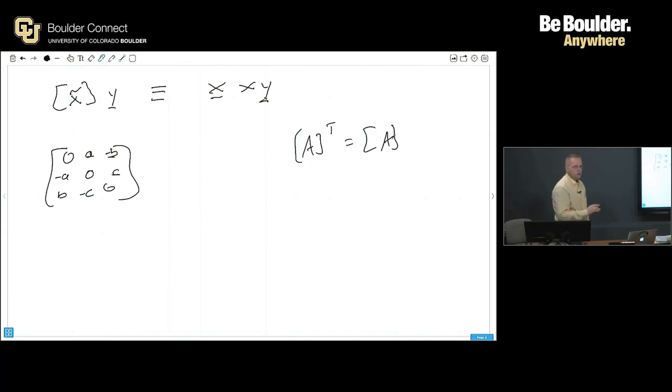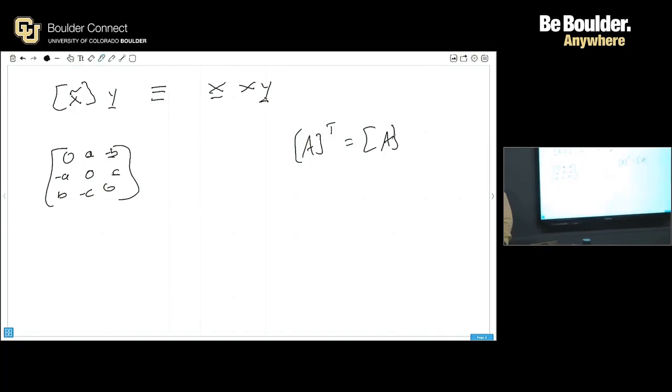Hopefully, most of you have seen this, but some haven't. A transpose is equal to A. That means it's symmetric. Diagonals have to be the same, and then you just flip the off diagonals.